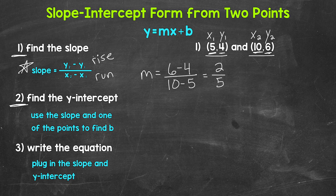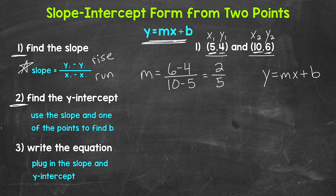Now we move on to step 2: we need to find the y-intercept. We use the slope and one of our points to figure out the y-intercept. Remember, slope-intercept form is y equals mx plus b, where m is the slope, b is the y-intercept, and x and y are the coordinates of any point on the line. We'll plug in 2/5 for m and use the point (5, 4) for our x and y coordinates.